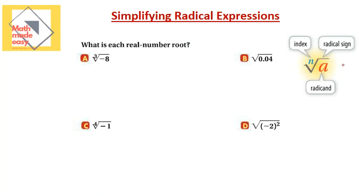Before we go through the example, I want you to see the standard form of a radical expression. This is what we call the radical sign. We used to say it's a square root, but it's not always a square root. Above the radical sign is what we call the index, and below the radical sign we have what we call the radicand. Here the index is three and the radicand is negative eight. It's important that you understand this vocabulary because you might see it in a question header.